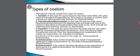The third type is eucoelome. Here, the space between the body wall and gut wall is lined by mesodermal epithelium or peritoneum. Such animals are called eucoelomate animals, and the visceral organs are suspended in the coelome by mesenteries. Example: annelids to chordates. It is very clear that eucoelome is the most advanced type of coelome present in animals.